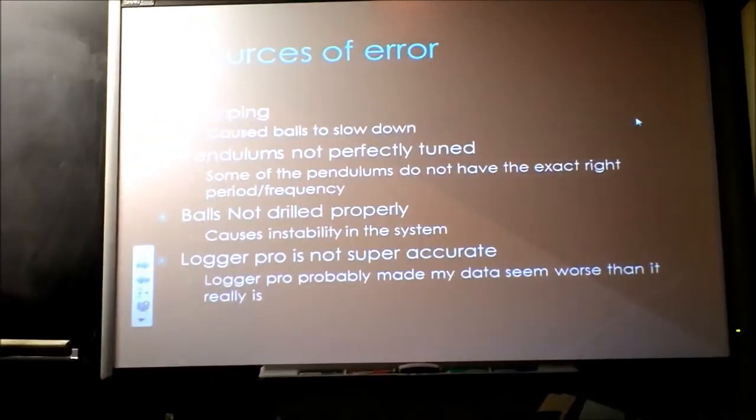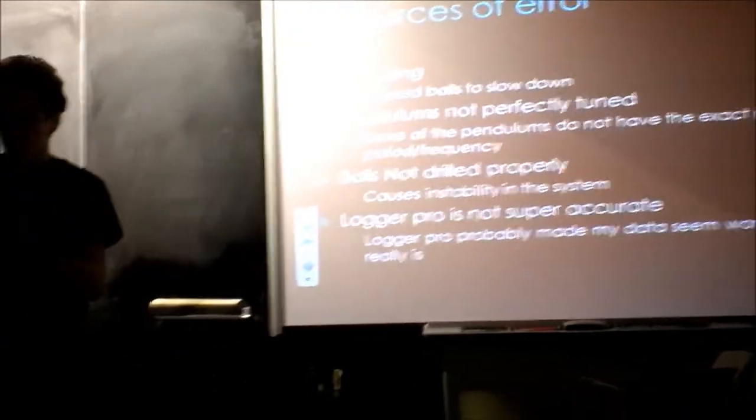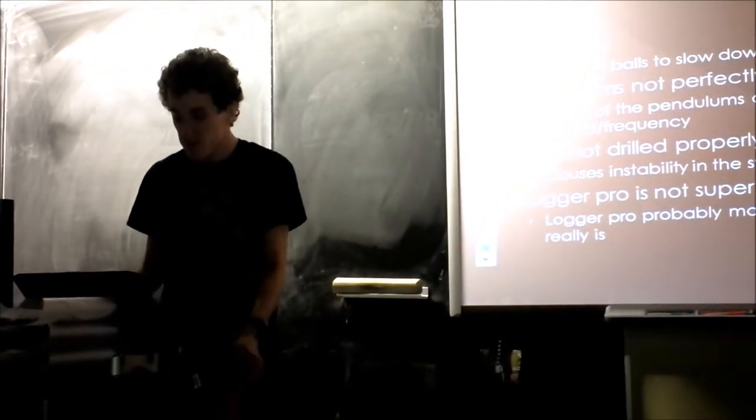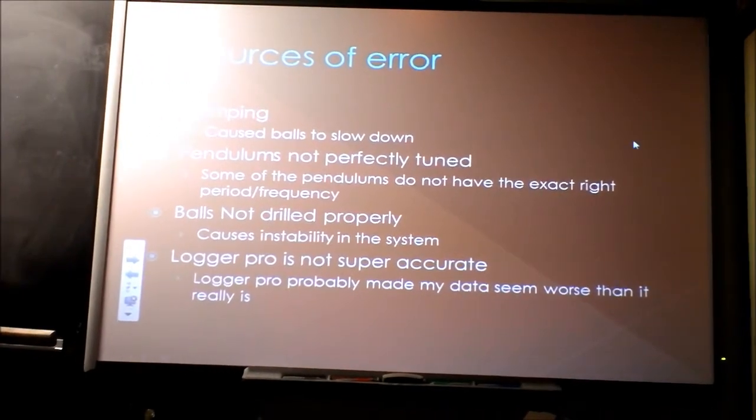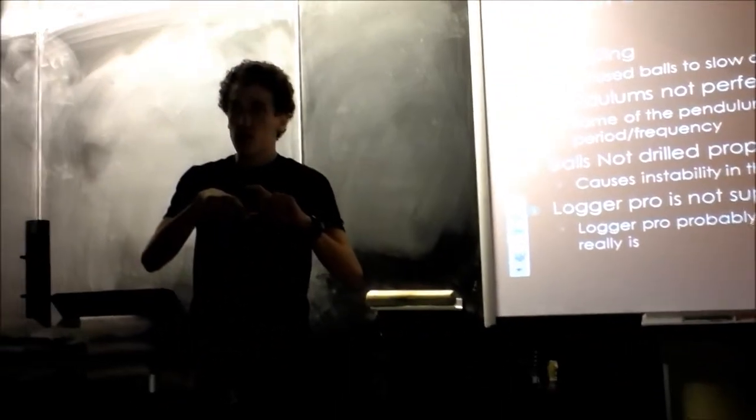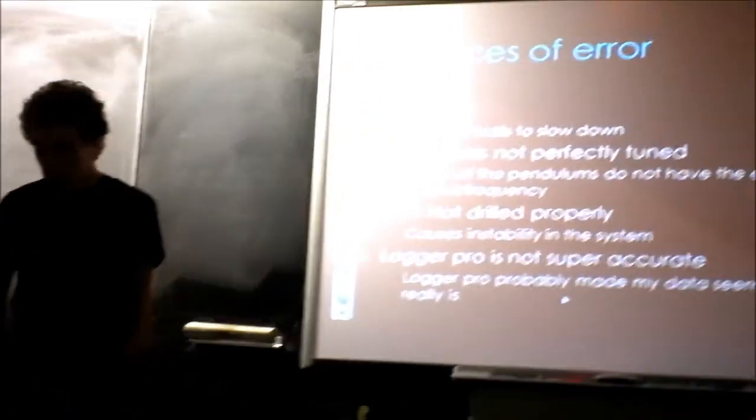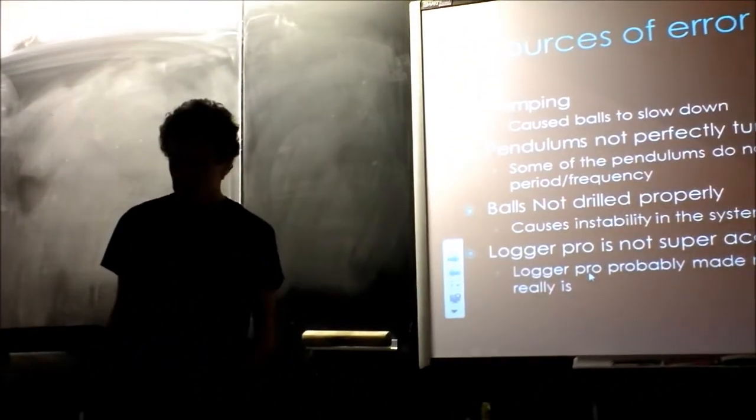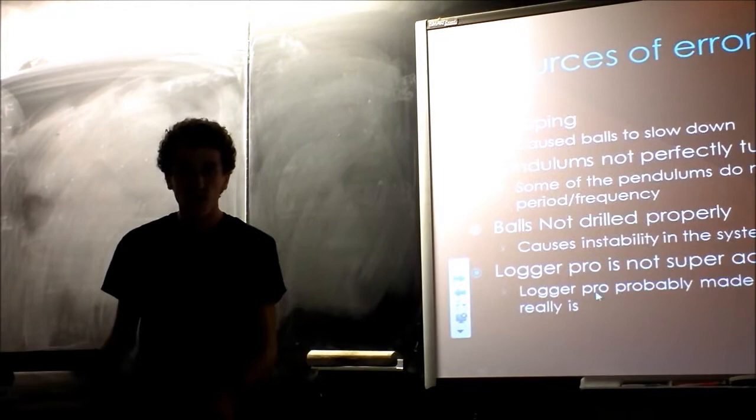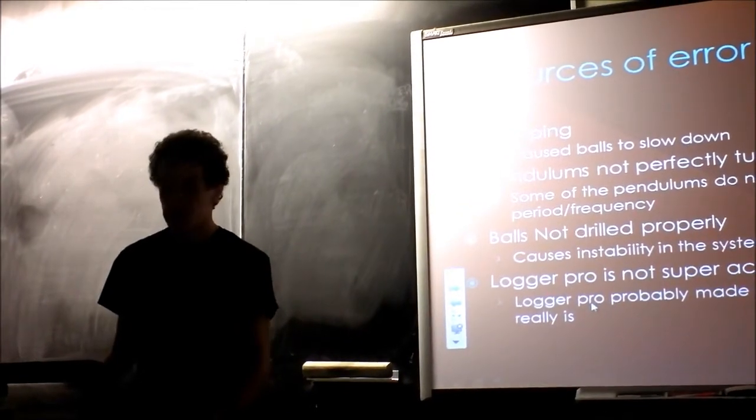Some of the sources of error - damping, I mean they're all different lengths so they'll damp at different rates, and that'll cause them to slow down differently, but I don't think that had a huge effect. The pendulums, they're not the exact perfect length. Some of the balls, I didn't drill them, I just took the ones from the old project, and some of them weren't drilled directly through the middle, so if you let it go for a while, they'll get really far off and start knocking into each other and stuff. And also, the VloggerPro video analysis that I used to calculate the period, I feel like created more error than there actually was, because it lines up really well, but according to this it's like 15% off, which it definitely wasn't.